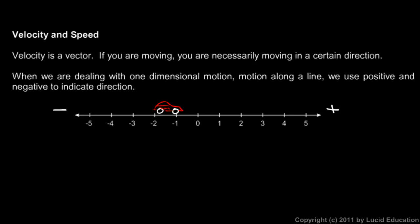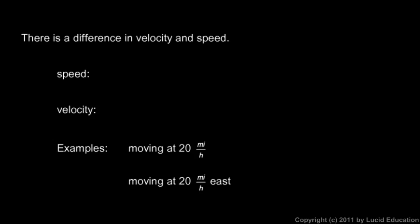In science in general, and math in particular, we try to be very exact. And so words are precisely defined, or as much as they can be. And speed and velocity do have slightly different definitions that you need to be aware of.